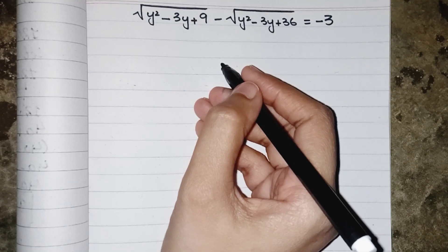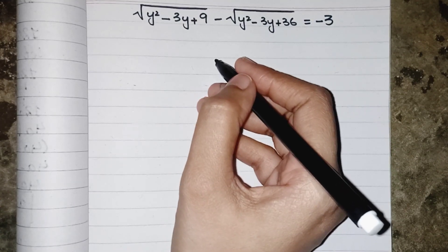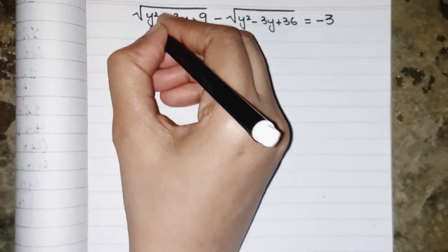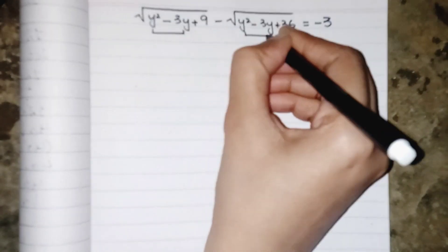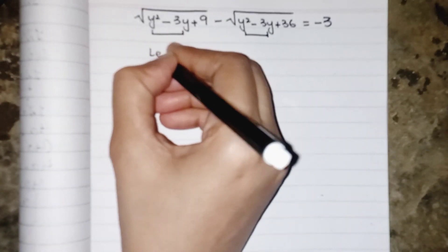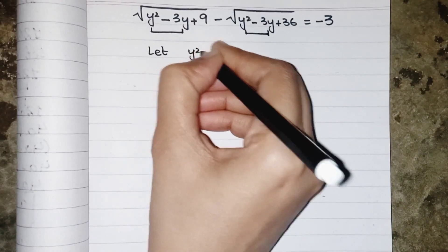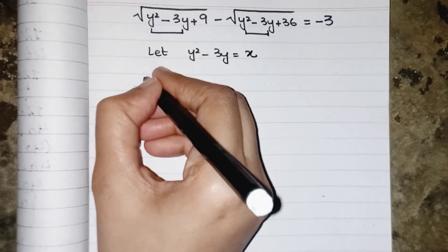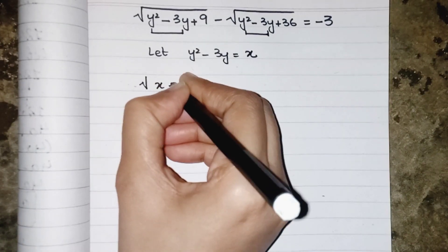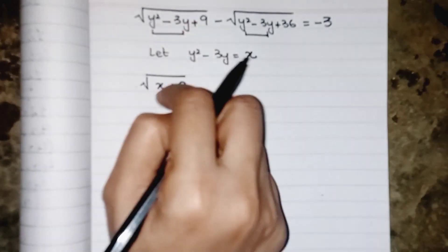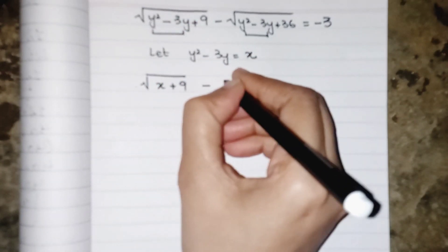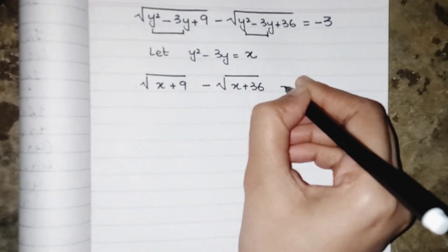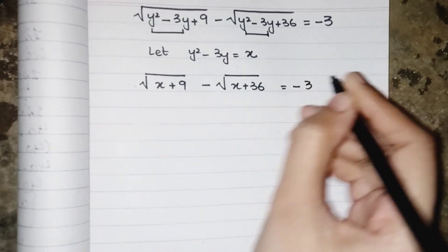Hello everyone, today we are solving this amazing and interesting equation where we have square roots, and inside the square root the starting two terms are exactly the same. So we can say that let y squared minus 3y equals x. Now our equation will be: x plus 9, in place of y squared minus 3y we write x, so x plus 36 equals minus 3.